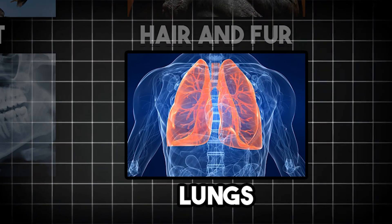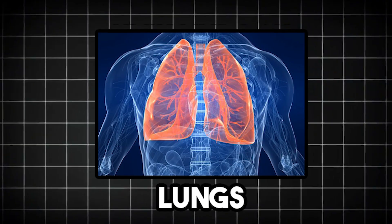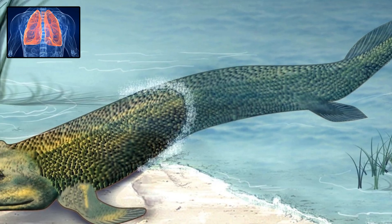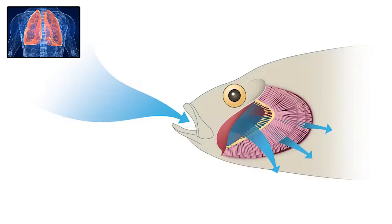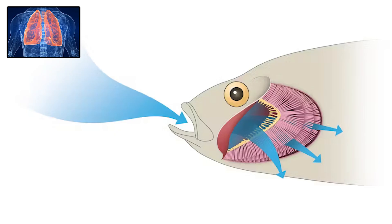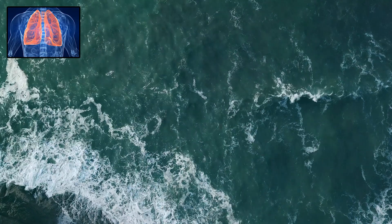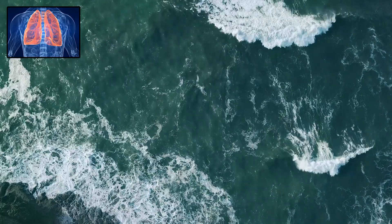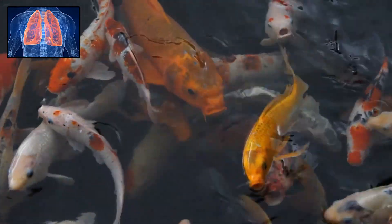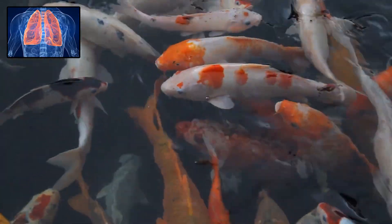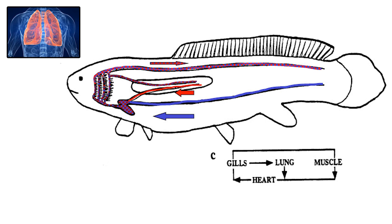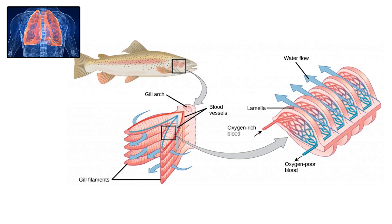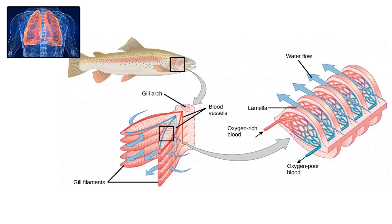Lungs are specialized internal organs that allow animals to extract oxygen from air and expel carbon dioxide, two essential processes for energy production and survival. The evolution of lungs made life on land possible for vertebrates, helping animals move beyond aquatic habitats onto dry land. Before lungs, many early life forms relied on simple diffusion or gills to absorb oxygen from water. The earliest lungs developed in fish living in low-oxygen freshwater habitats, beginning as air sacs that allowed fish to gulp air from the surface. Over time, these air sacs evolved into more sophisticated structures capable of supporting an animal's entire oxygen demand.